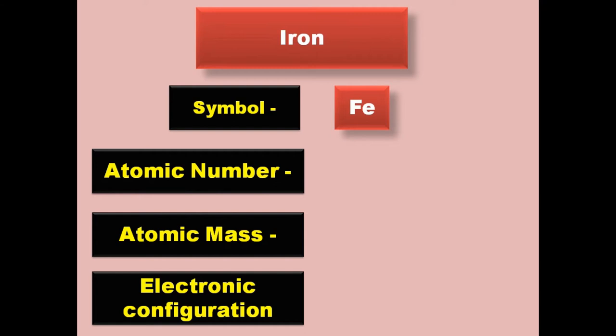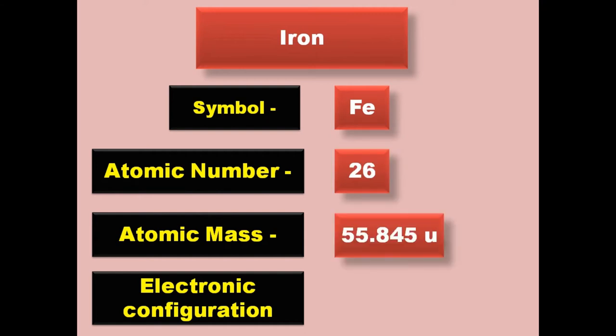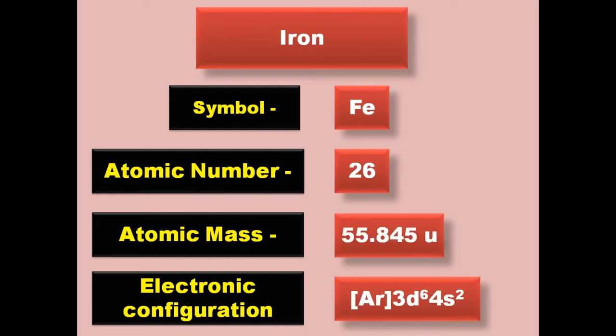Iron has symbol Fe, atomic number 26, atomic mass 55.845, electronic configuration [Ar] 3d6 4s2. Iron is a transition metal and exists in solid form at room temperature.